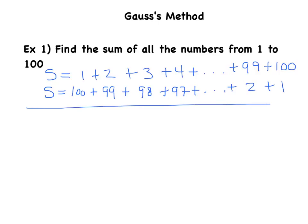So then he said, okay, well I'm just going to add these two equations together. So S plus S gives me 2S. And watch what happens here. 1 plus 100 is 101. 2 plus 99 is 101. 3 plus 98 is 101. 4 plus 97 is 101. And all the terms added up are going to sum to 101.